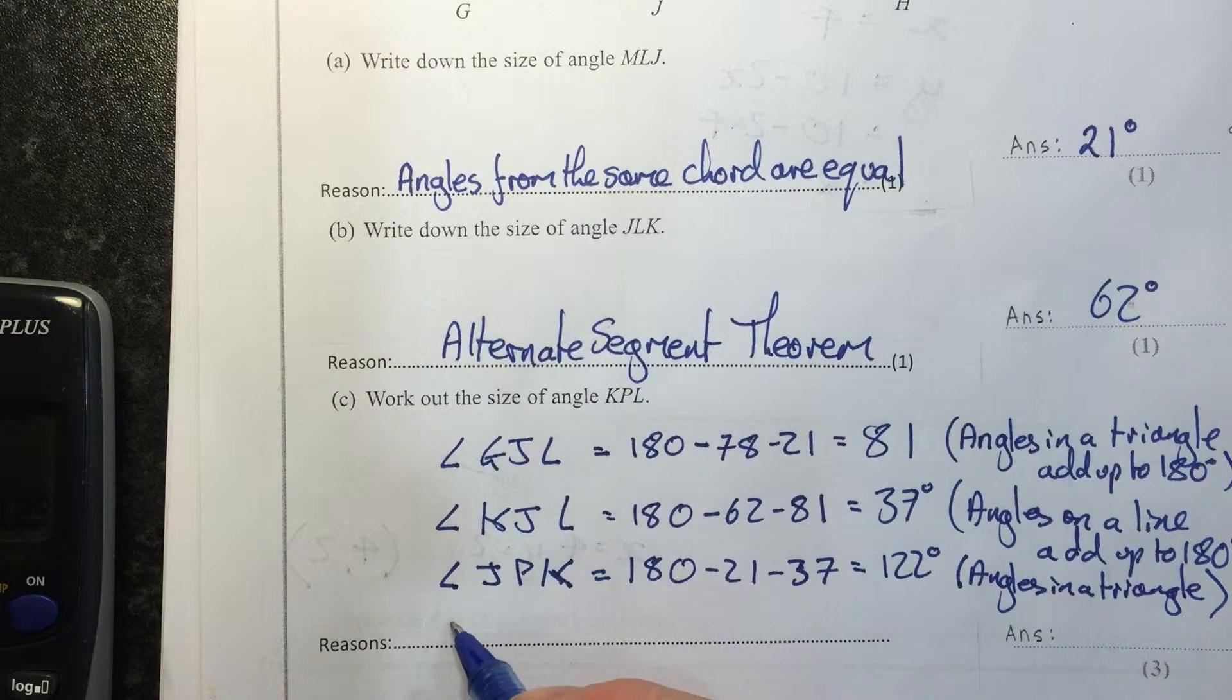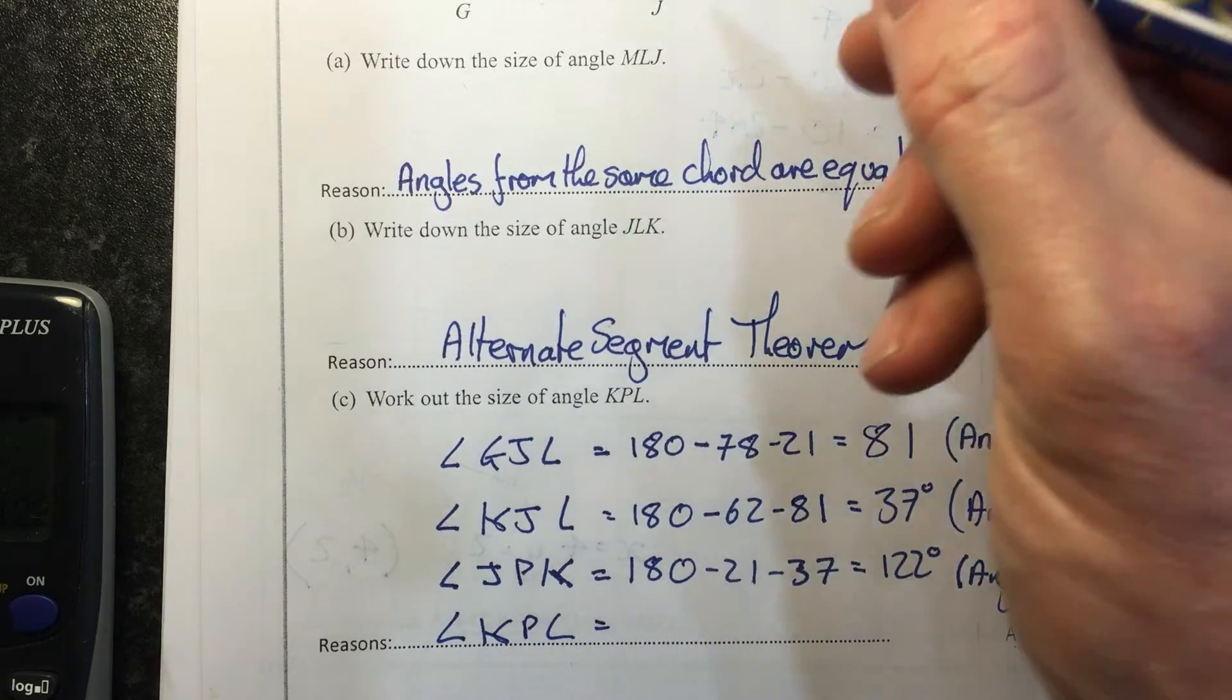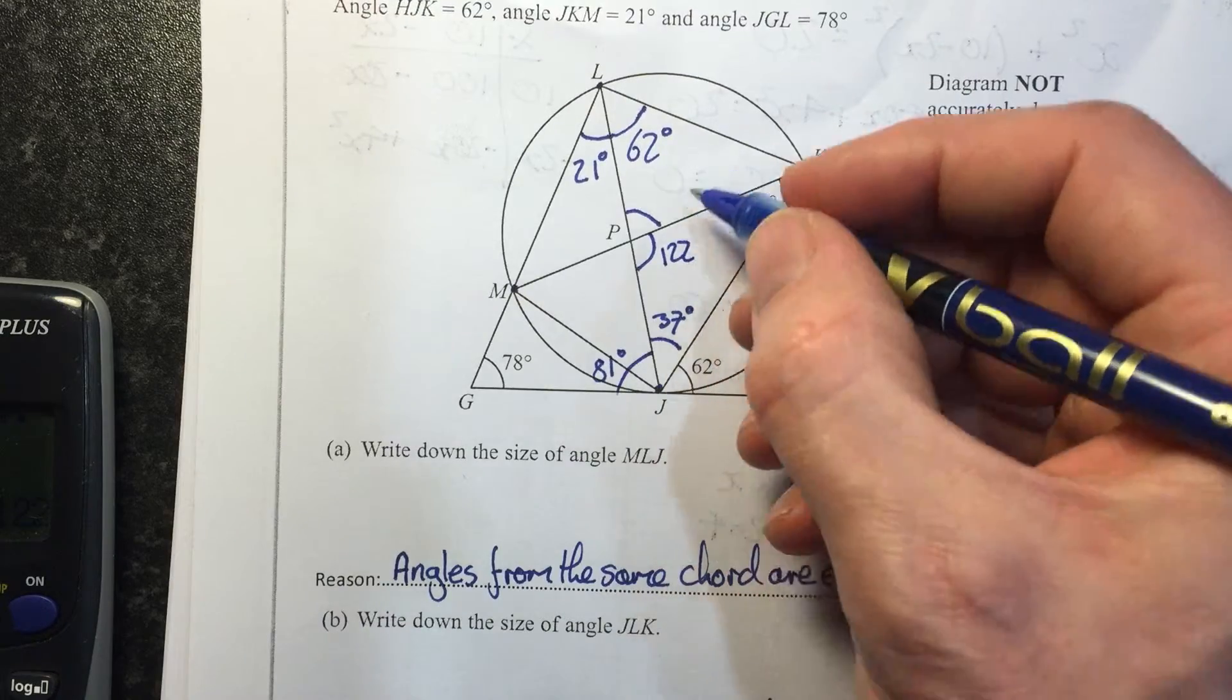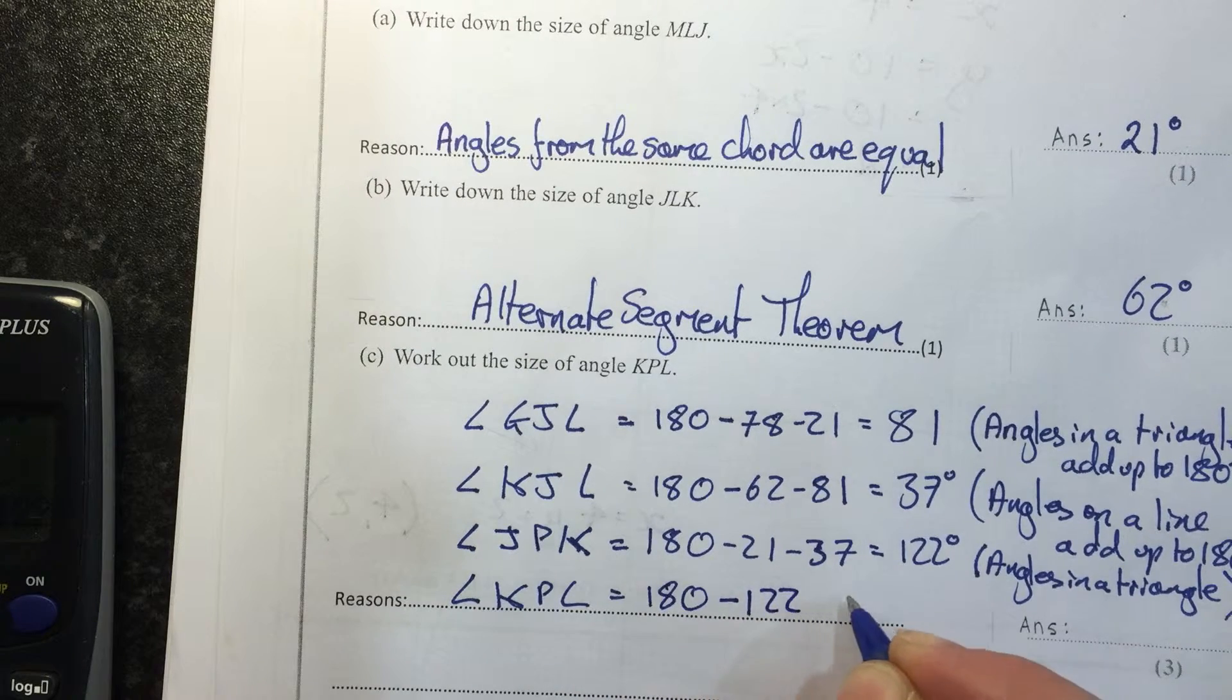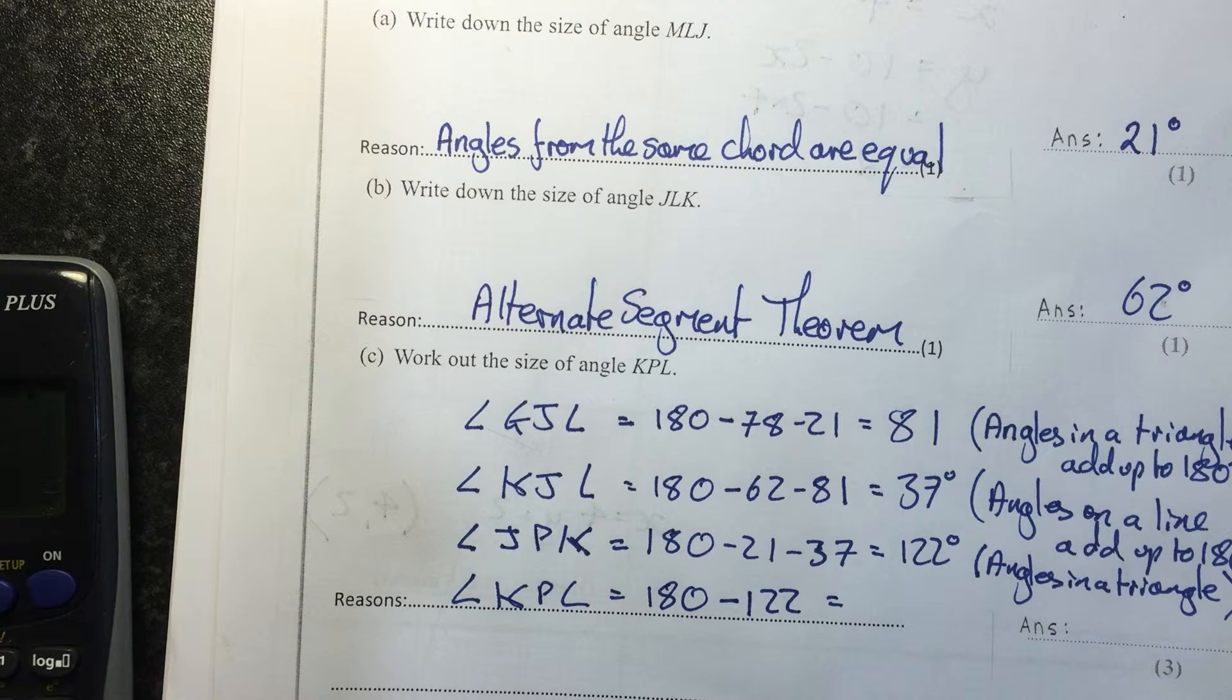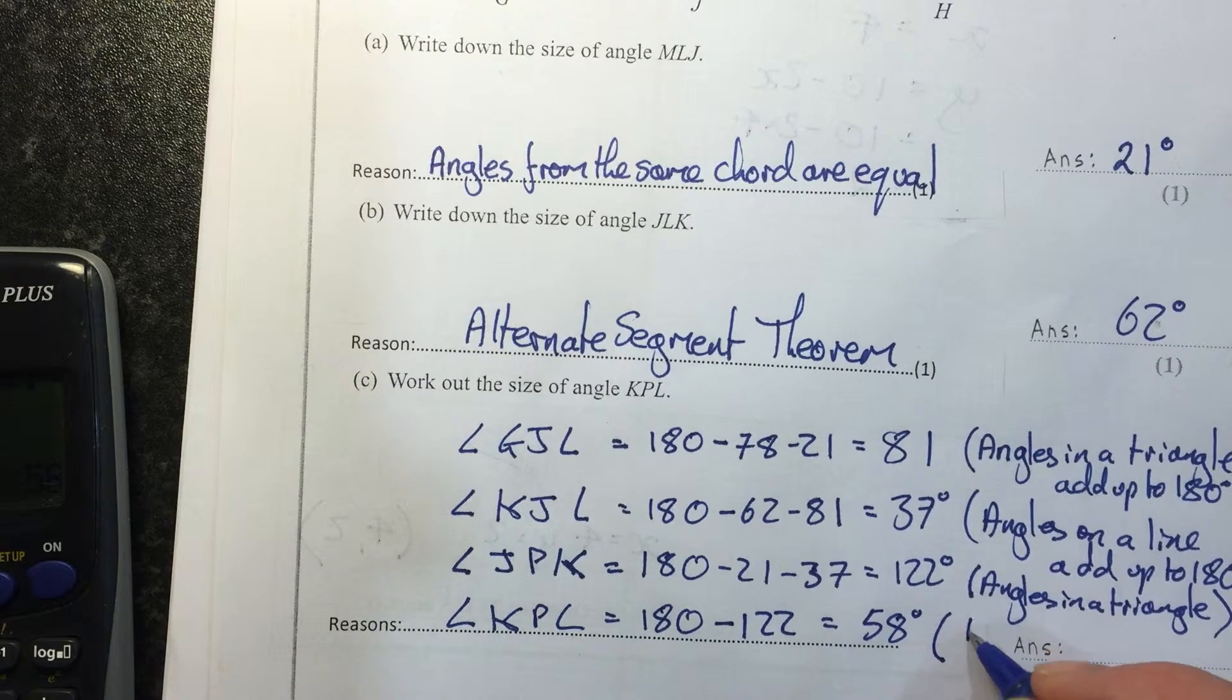And then finally, the one we want: angle KPL equals—this one's 122, so this one is 180 minus 122, which equals 58 degrees. And that's angles on a line up to 180 degrees.